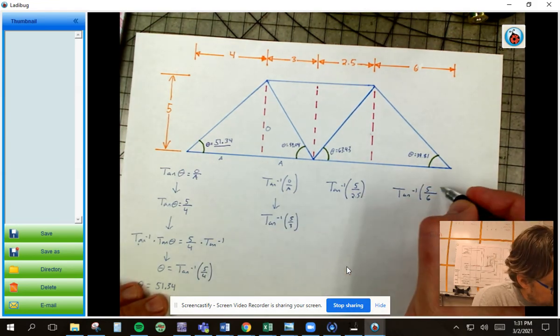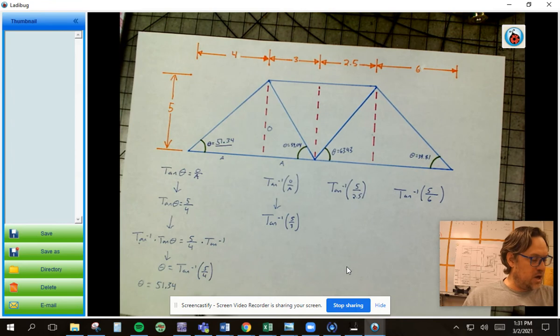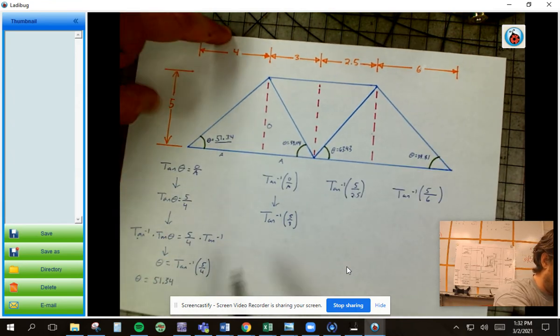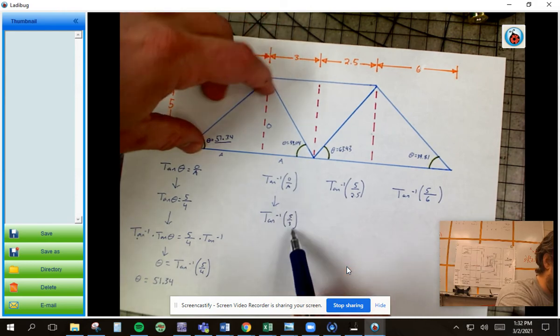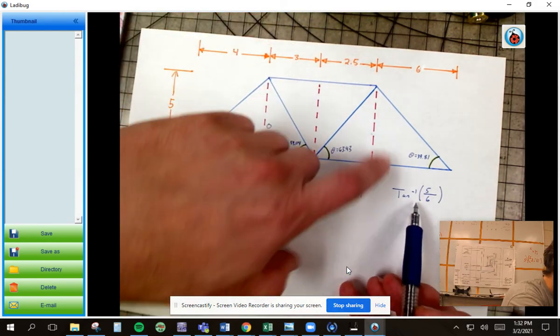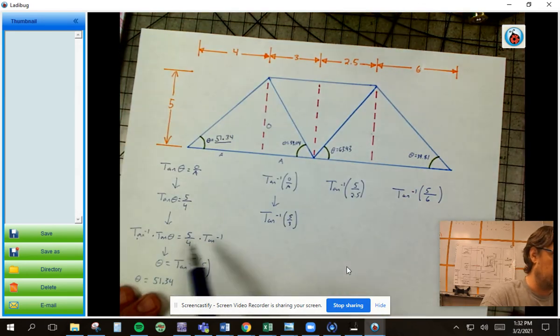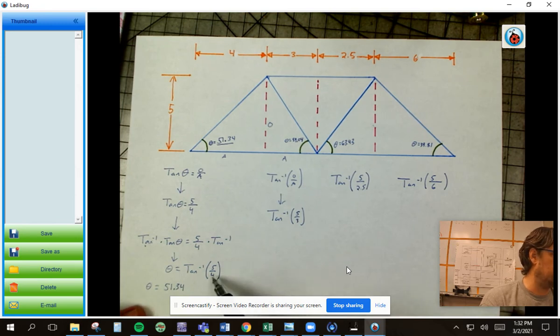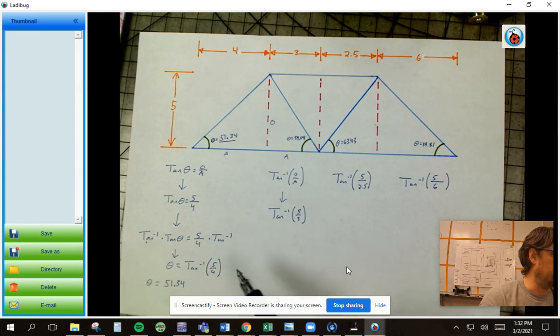So you see a little pattern as we go over here, right? Inverse tangent, five over four. Inverse tangent, five over three. Inverse tangent, five over 2.5. Inverse tangent, five over six. As we work our way across, really, every one of these formulas, the only thing that's going to change is the denominator. And it'll be like this for the truss as you work as well.